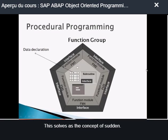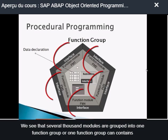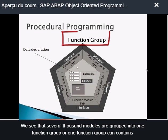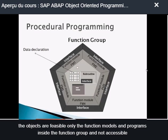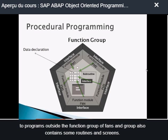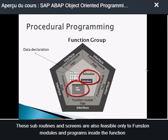This image shows us the concept of a function module, which is one of the procedural programming approaches in SAP ABAP. Several function modules are grouped into one function group, and one function group can contain one or more function modules. A function group also contains data declarations or data objects. These data objects are visible only to function modules and programs inside the function group, and not accessible to programs outside it. A function group also contains subroutines and screens, which are also visible only internally.